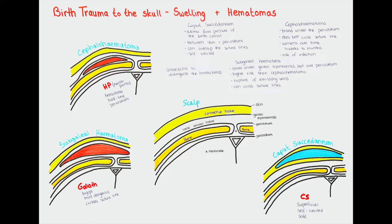It's important to differentiate between caput succedaneum and cephalohematoma. Cephalohematoma is a collection of blood under the periosteum. So instead of edema, it is a collection of blood, and it lies under the periosteum rather than above. A key to differentiating it is that in a cephalohematoma, the pooled blood does not cross the sagittal suture line on top of the fetal head, so it's often going to be seen on only one side.